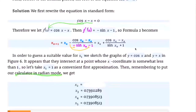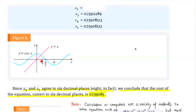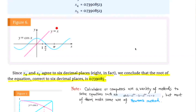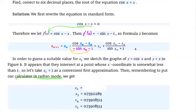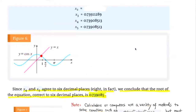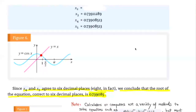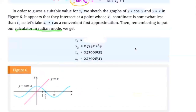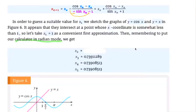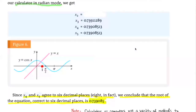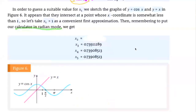Now we have to start with the first approximation x1. In order to guess a suitable value, we sketch the graph of cosine x and also y equals x. We're looking for where they are equal. It looks like they intersect at a point whose x-coordinate is close to 1, a little bit less than 1. So let's take x1 to be 1 as a convenient first approximation.